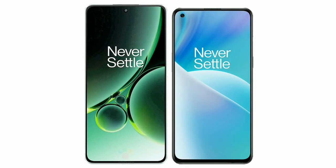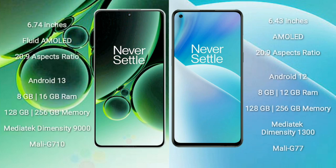I will compare the new OnePlus Nord 3 with OnePlus Nord 2T. OnePlus Nord 3 comes with a 6.74-inch flat AMOLED display, while OnePlus Nord 2T comes with a 6.43-inch AMOLED display. Both run Android with similar aspect ratios.